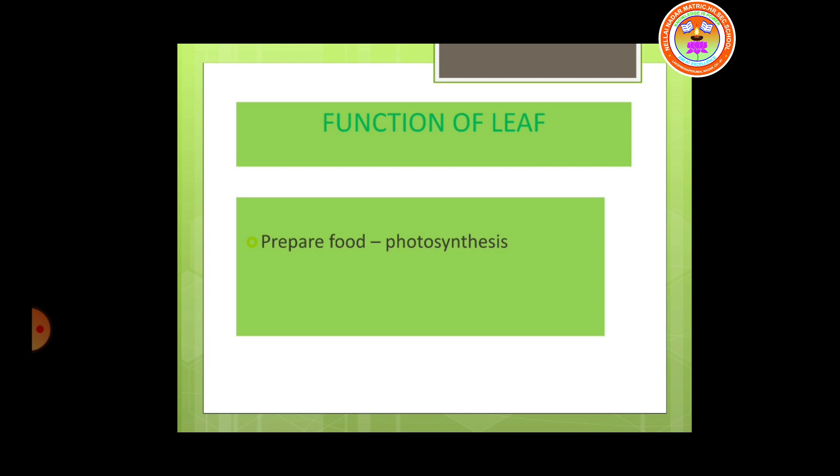Now we will move on to the function of leaf. The main function of the leaf is the preparation of food by the process of photosynthesis. It also helps in respiration, which is the exchange of gases, and transpiration, which is the removal of excess water from the leaf. These three are the functions of the leaf.